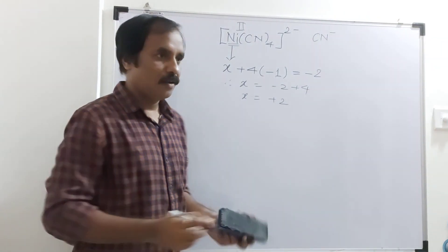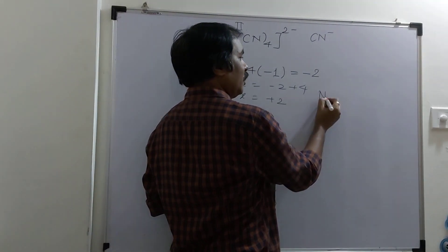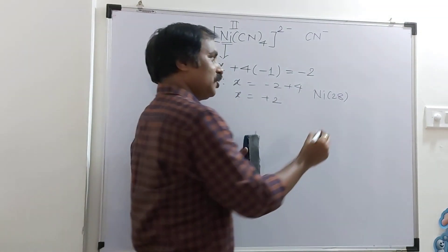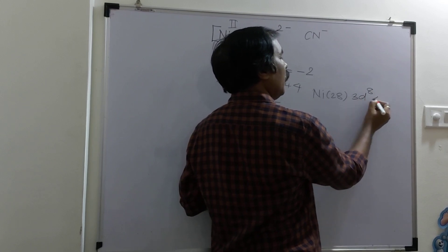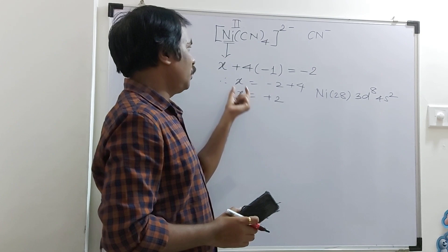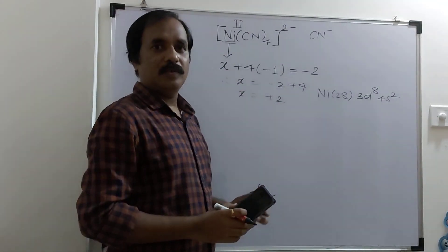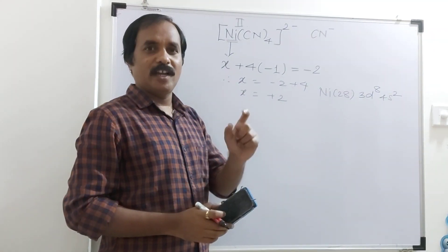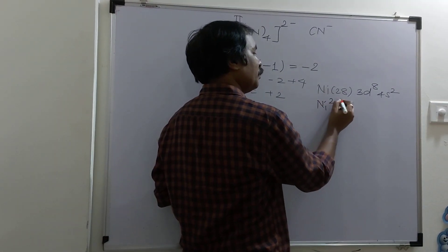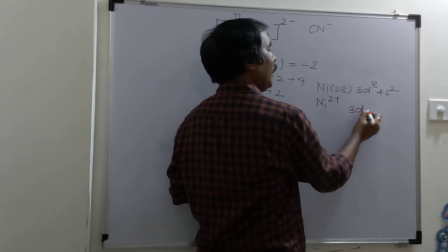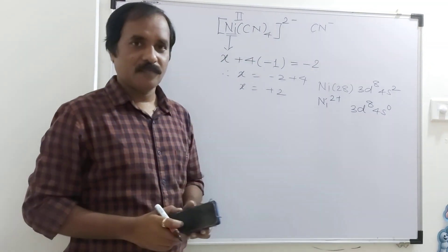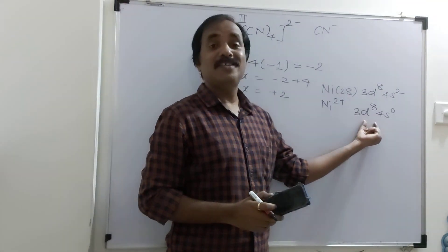We know that the atomic number of nickel is 28. The outer shell electronic configuration is 3d⁸ and 4s². For Ni²⁺, the meaning of +2 is removal of 2 electrons. So Ni²⁺ has configuration 3d⁸ and 4s⁰. This is an example of a d⁸ system.